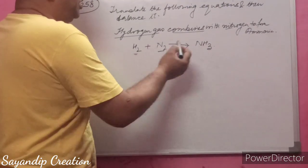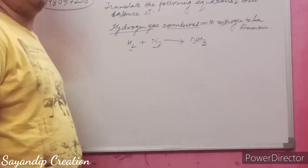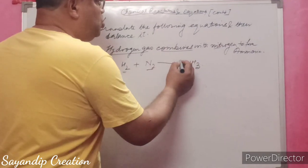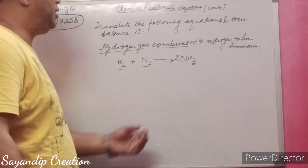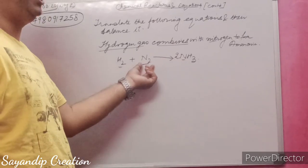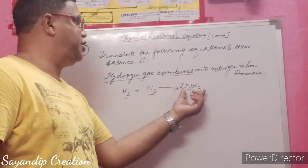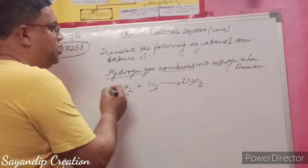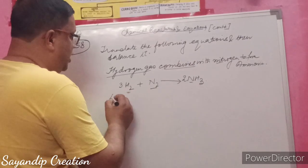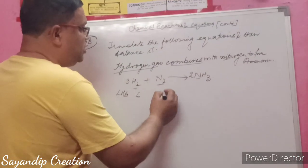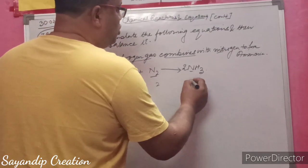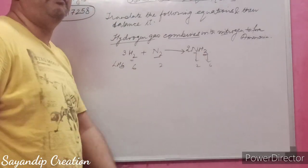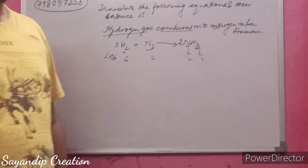How to balance it: on the left there are two nitrogen atoms and two hydrogen atoms; on the right there is one nitrogen and three hydrogen. If you write 2 before NH3 it gives two nitrogen on the right — correct. Now hydrogen: 2×3 = 6 hydrogen on the right, so write 3 before H2 to give 6 hydrogen on the left. The balanced equation is: 3H2 + N2 → 2NH3.